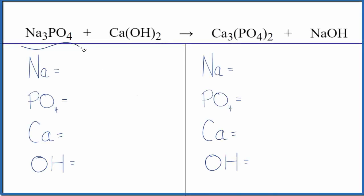Let's balance the equation Na3PO4 plus Ca(OH)2, sodium phosphate and calcium hydroxide. We'll also take a look at the type of reaction.